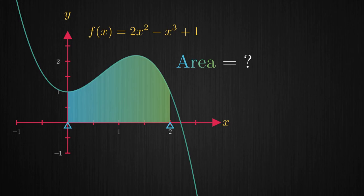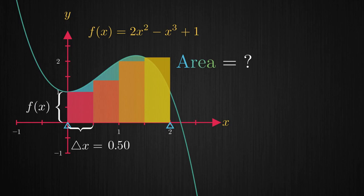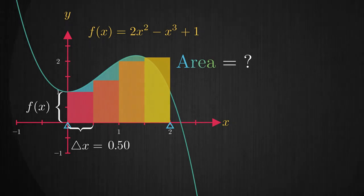If we divide the interval into four equal parts each corresponding to a width Δx of 0.5, build rectangles with this width and height given by the function value at the interval points, the sum of areas of each of these rectangles is an approximation to the area under the curve.